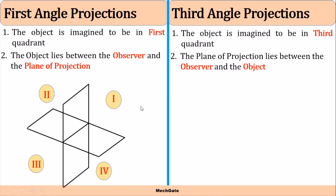If the object is lying in the first quadrant, we can say its position is above HP — this is our horizontal plane — and in front of VP — this is our vertical plane. So if the object is in the first quadrant, it is above HP and in front of VP.